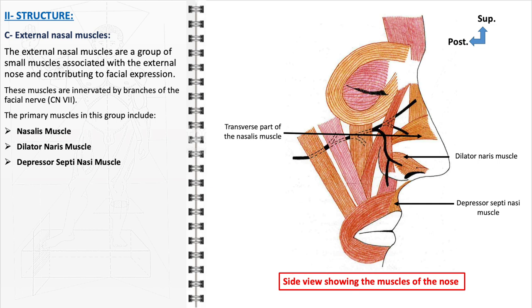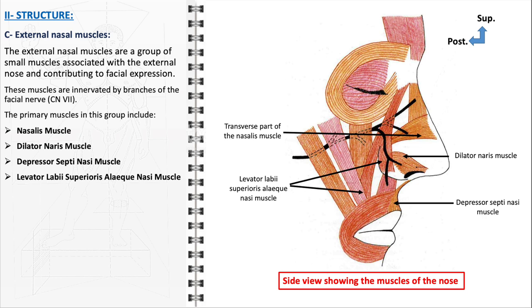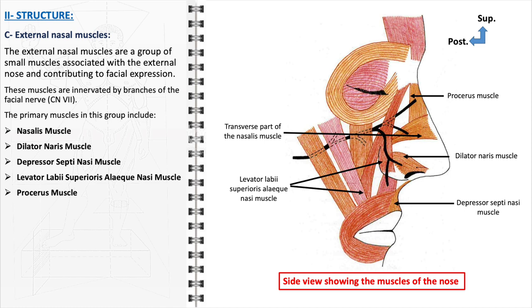The depressor septi nasi muscle plays a role in lowering the nasal septum. The levator labii superioris alaeque nasi muscle has a dual function: it elevates the upper lip and dilates the nostrils, and its contribution to facial expressions is particularly evident in emotions requiring elevation of the upper lip. The procerus muscle, located between the eyebrows, draws down the medial angle of the eyebrows and produces transverse wrinkles over the bridge of the nose, often engaged in expressions of frowning or concentration.